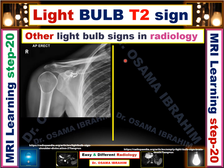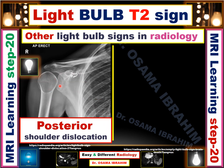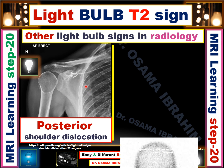There are two other light bulb signs in radiology, not depending on MRI findings. In the anterior-posterior view of a right shoulder radiograph, you can see the humeral head appearing like a light bulb. This is called the light bulb sign for posterior shoulder dislocation on the AP radiograph of the shoulder.